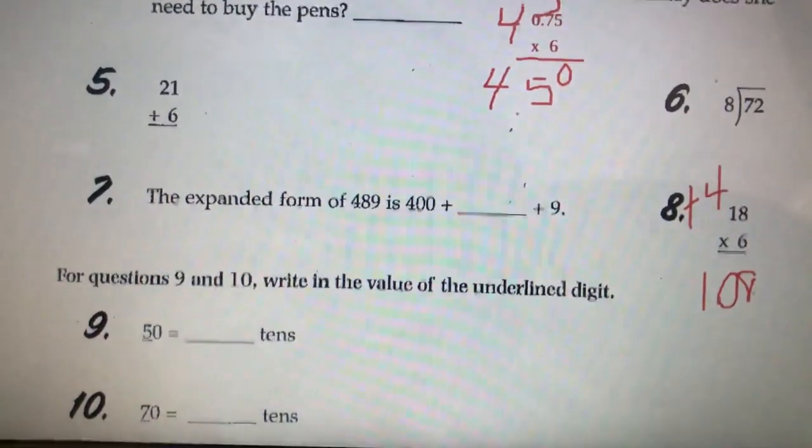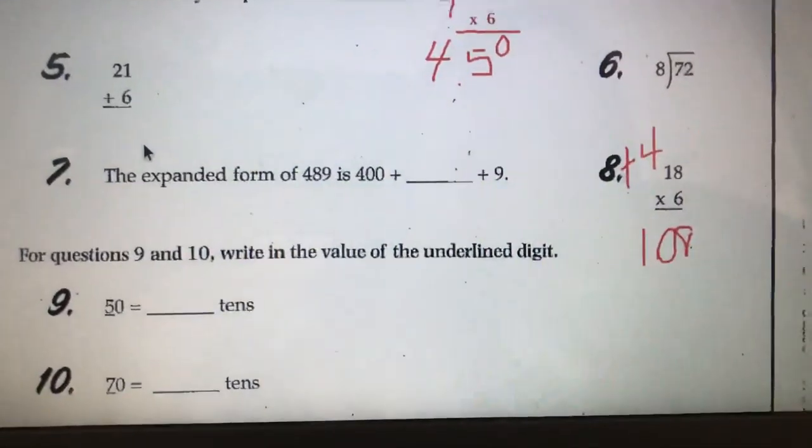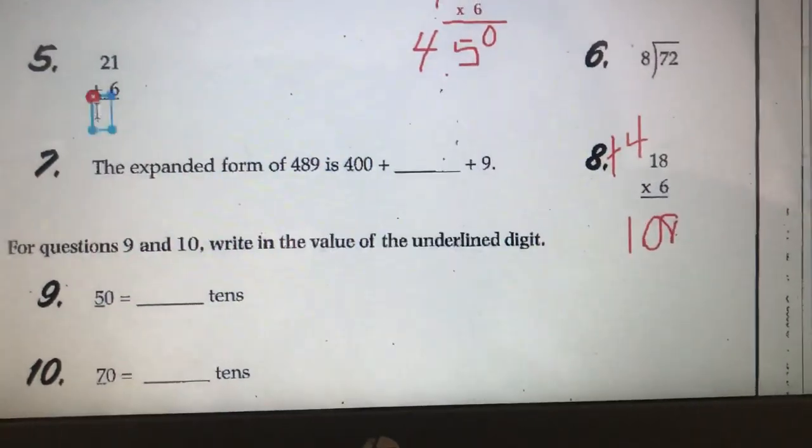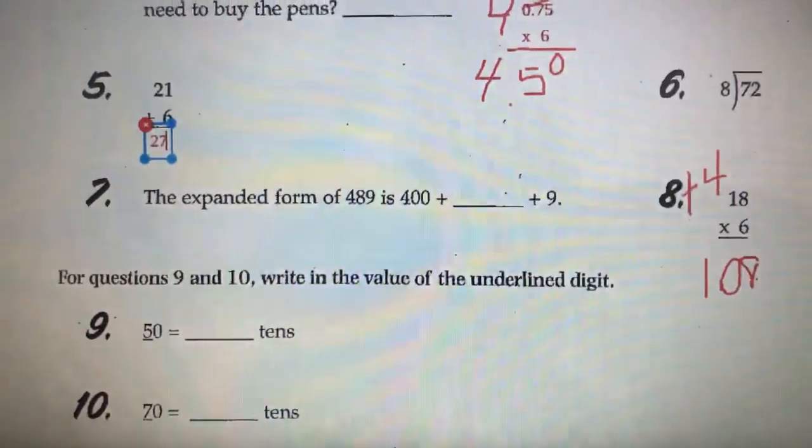Number 5. 21 plus 6. 6 plus 1 is 7. 2 plus nothing is 2. So, we would end up with 27.